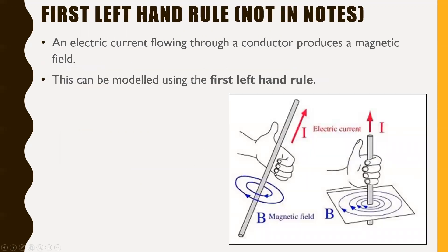This is not in our notes — it would have been from a previous time. An electric current flowing through a conductor produces a magnetic field. If you have a straight conducting wire and there's an electric current going through it, it's going to generate a rotating magnetic field. This can be modeled using the first left hand rule: you curl your fingers with your thumb pointed the other way. Your thumb represents the direction of your electric current, and your fingers represent the direction that your magnetic field is going. We use our left hand for actual electric current — the flow of electrons.